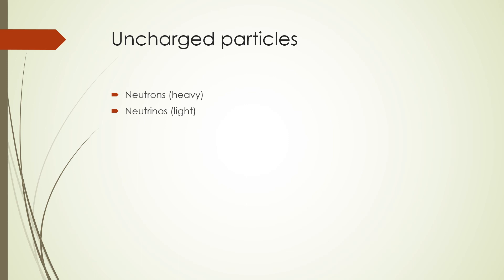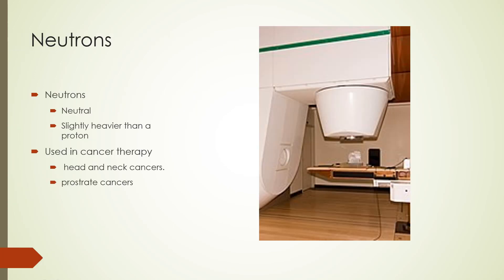Let's look next at a few uncharged particles — neutrons, which are heavy, and neutrinos, which are light. Neutrons are neutral and slightly heavier than a proton. They are used in cancer therapy for head and neck cancers and also for prostate cancers. Neutrons can be produced by bombarding a beryllium target with protons.